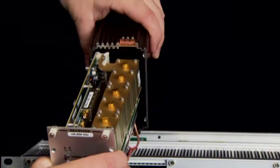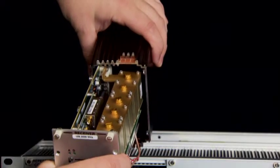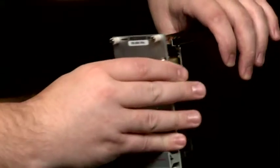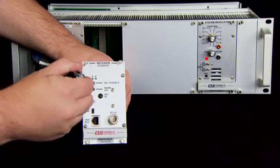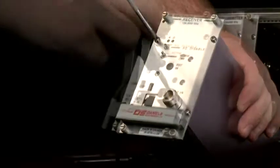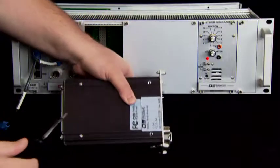Replace the receiver cover by sliding the receiver mainboard into the far left slot in the cover. Replace the four front panel screws and the two side panel screws.